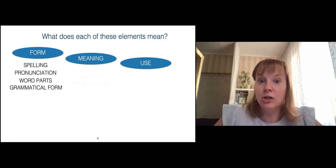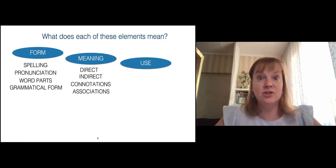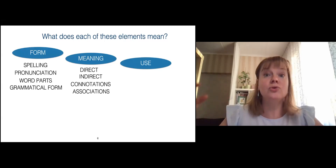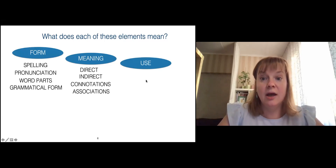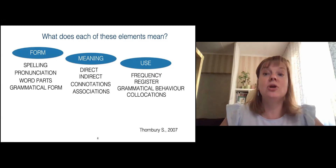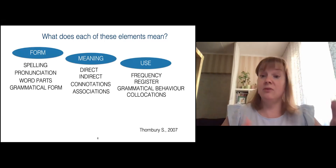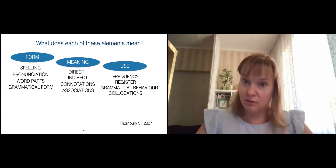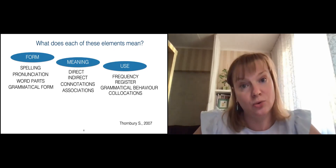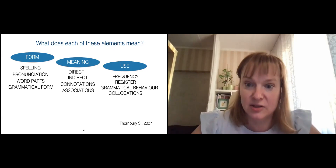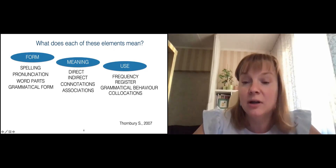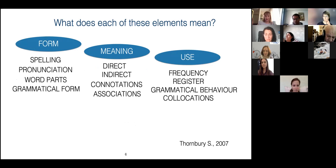We definitely need to take a look at meaning. The meaning of a word can be direct or indirect; it can have connotations — additional meanings or associations. And finally, use: we pay attention to the frequency, the register — whether the word comes from a formal or informal register, whether it's appropriate in academic discourse — and its grammatical behavior and collocation. So everything is included in form, meaning, and use.